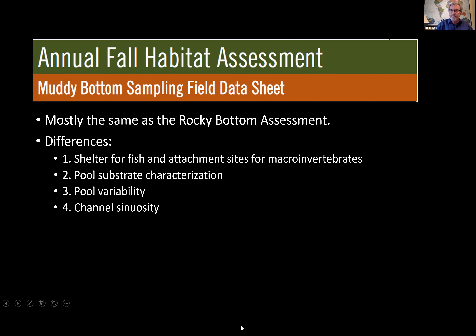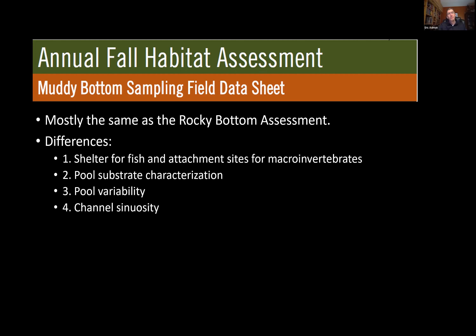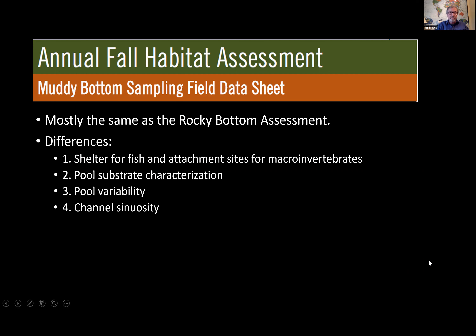A question arose: if a reach is about 50% silt bottom and 50% rocky bottom, when does it transition from muddy to rocky? The honest answer is it's unclear. One suggestion: pools are silted up where water is slow, with nothing but rocks where water is faster. In that case, you could go through both processes and somehow average or combine the results — a good question to run by the conservation district.